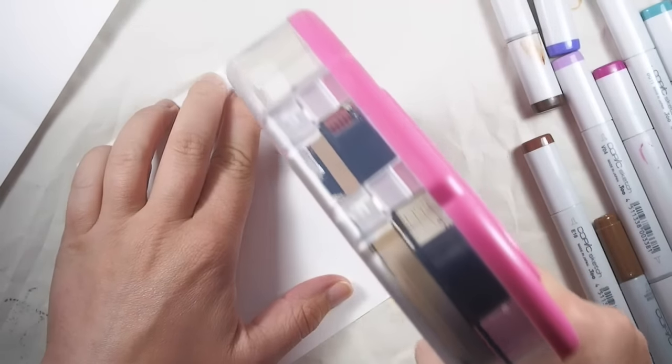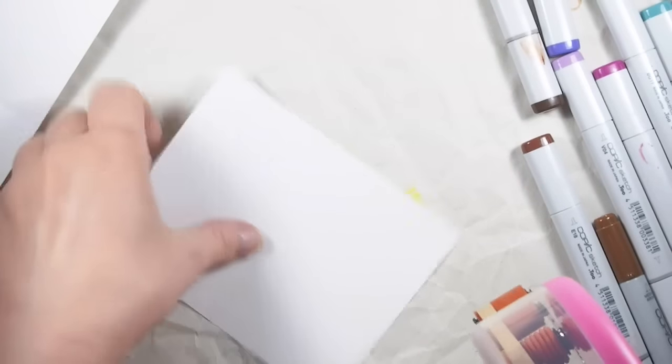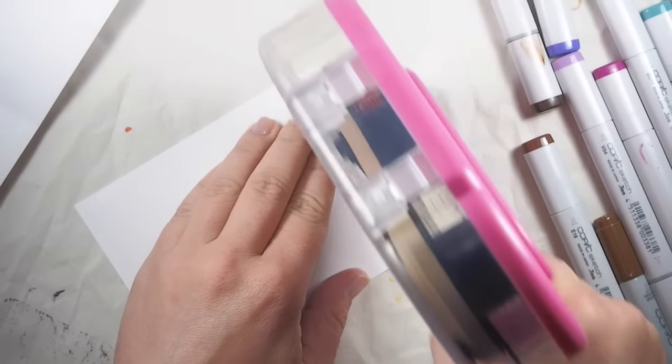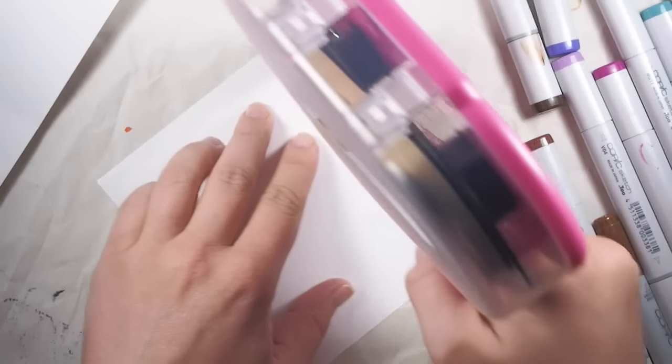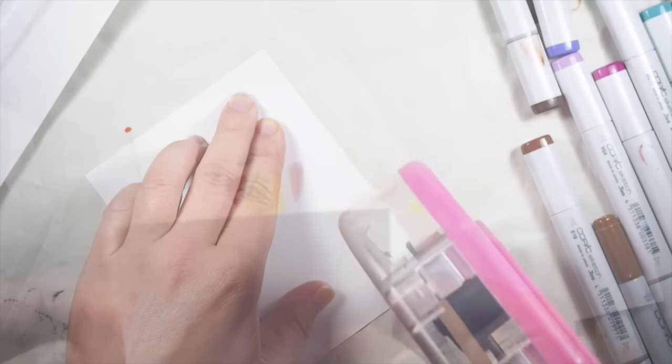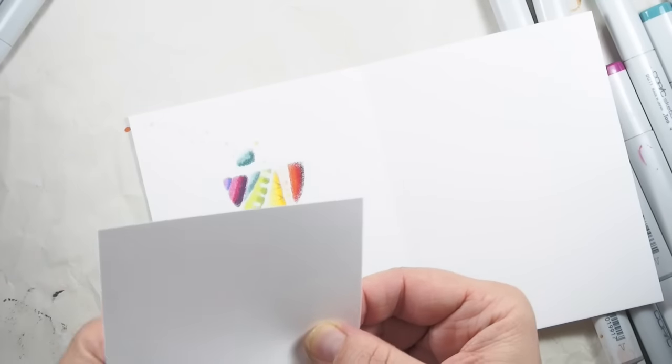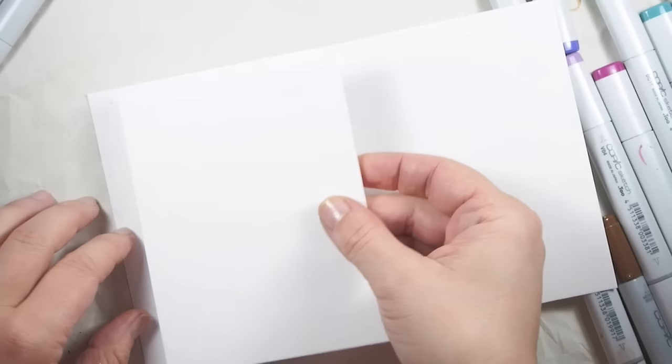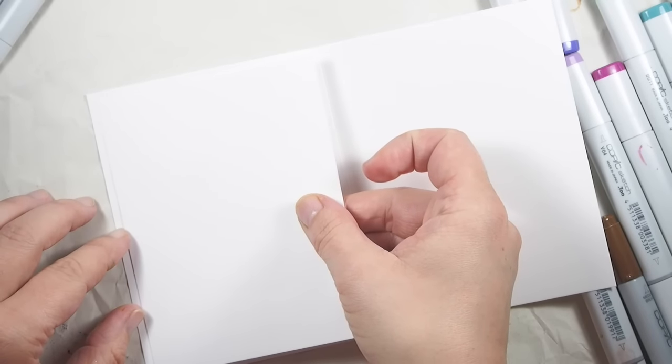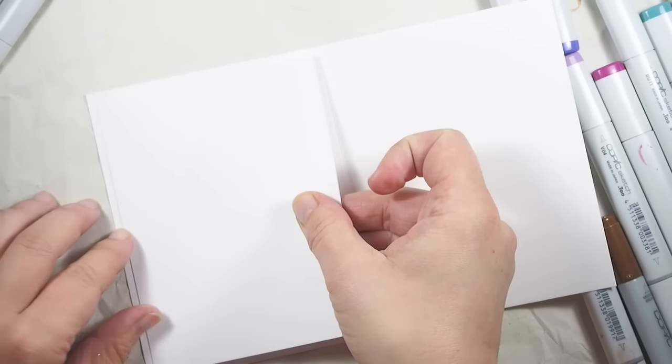Now this is a one-layer Copic card and the paper that I used bled through to the other side. As far as I know, there's only the Simon Says Stamp Ultra Heavy paper that will not bleed through. But I want to use the cheaper paper that I have as well, that I can get here in Germany. So I simply cut down a piece of paper, same cardstock, to a little bit smaller than four and a quarter and five and a half. Sorry, that was my phone.